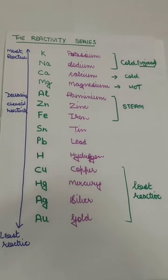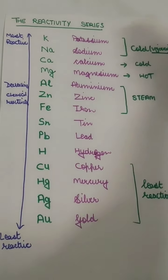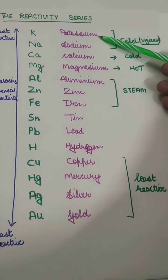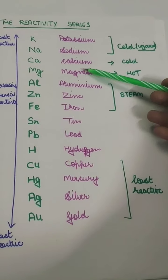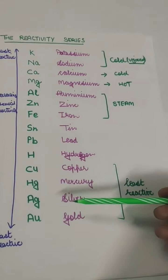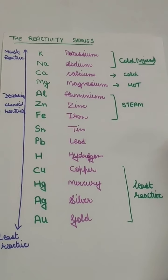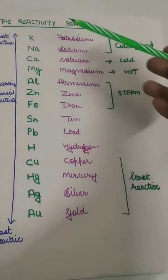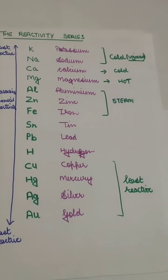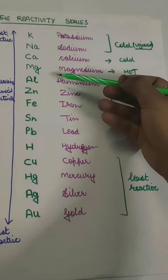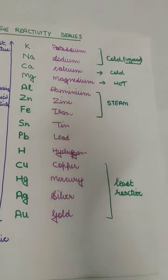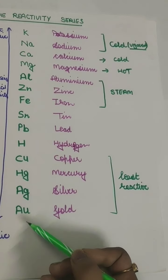I'll read out the series for you. The order is: potassium — very highly reactive — then sodium, calcium, magnesium, aluminium, zinc, iron, tin, lead, hydrogen, copper, mercury, silver and gold. You can skip mercury as it doesn't commonly appear. The common elements in your chemistry syllabus go from potassium down through iron, then hydrogen, copper, silver and gold. You can also add platinum.